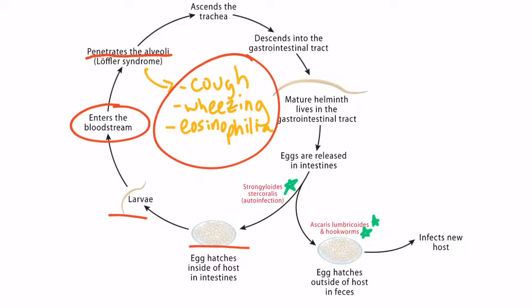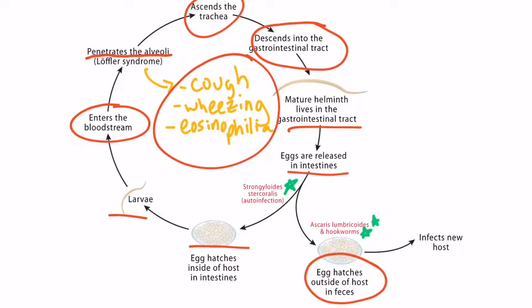It's important to know that these findings are transient and typically resolve after several weeks. This is because the parasites ascend the trachea and then descend into the gastrointestinal tract, where they cause gastrointestinal problems. It's within the gastrointestinal tract that the adult parasite takes up residence and releases eggs in the intestines. In the case of Ascaris lumbricoides and hookworms, the mature parasite remains in the GI tract and the eggs hatch once they're outside of the host in feces, causing infection in a new host.